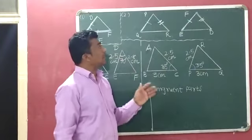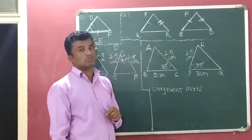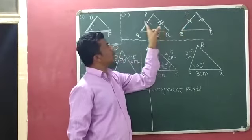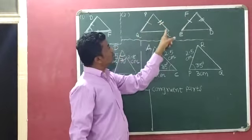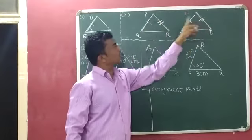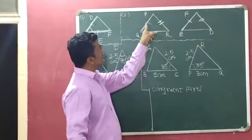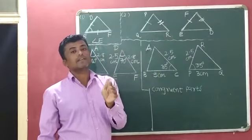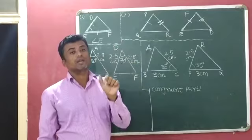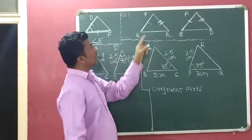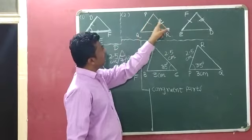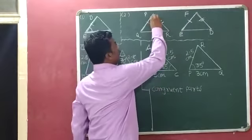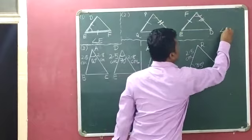We have to establish the condition by applying the SAS congruence rule. PQ's corresponding side is FE — they have the same length. PR's corresponding side is DF — they also have the same length. We have to use the SAS congruence rule, which means in between two sides, one angle must be included. So, if we add that angle P is equal to angle F...